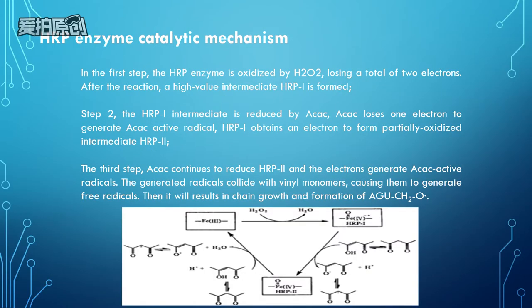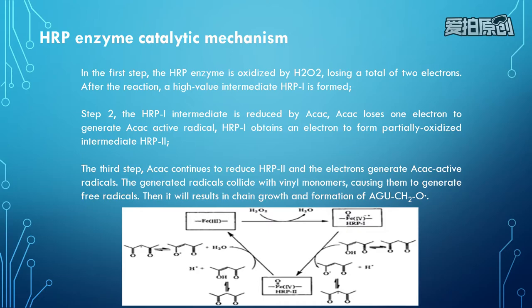The next page is about the HRB enzyme catalytic mechanism. After the third step, we obtain chain growth and the formation of an AGU-CH2O group, which includes one electron.